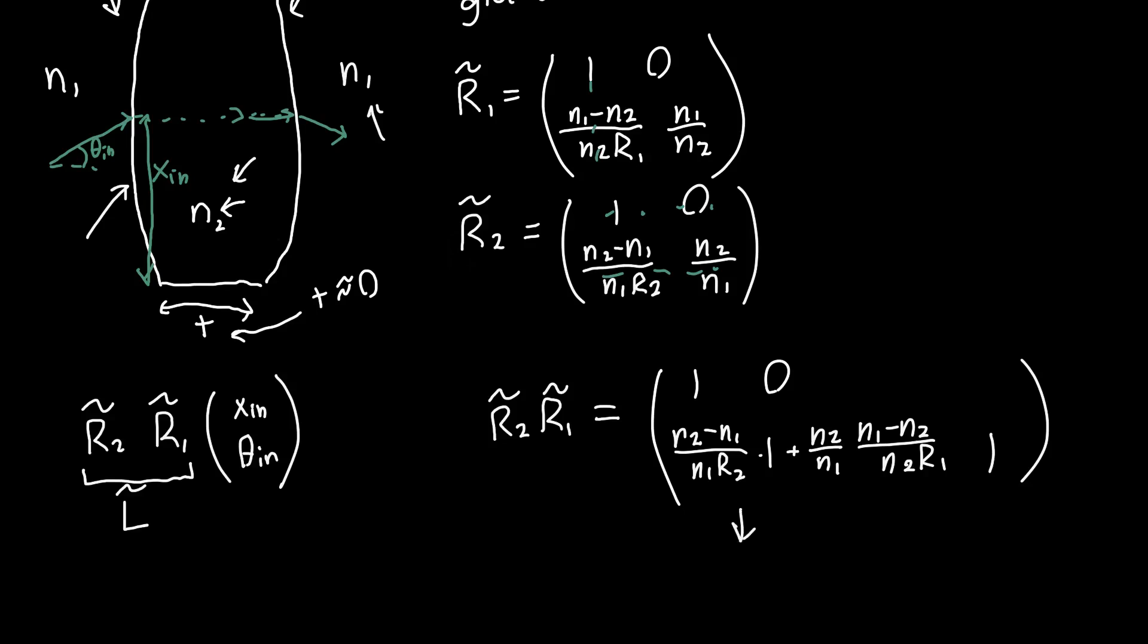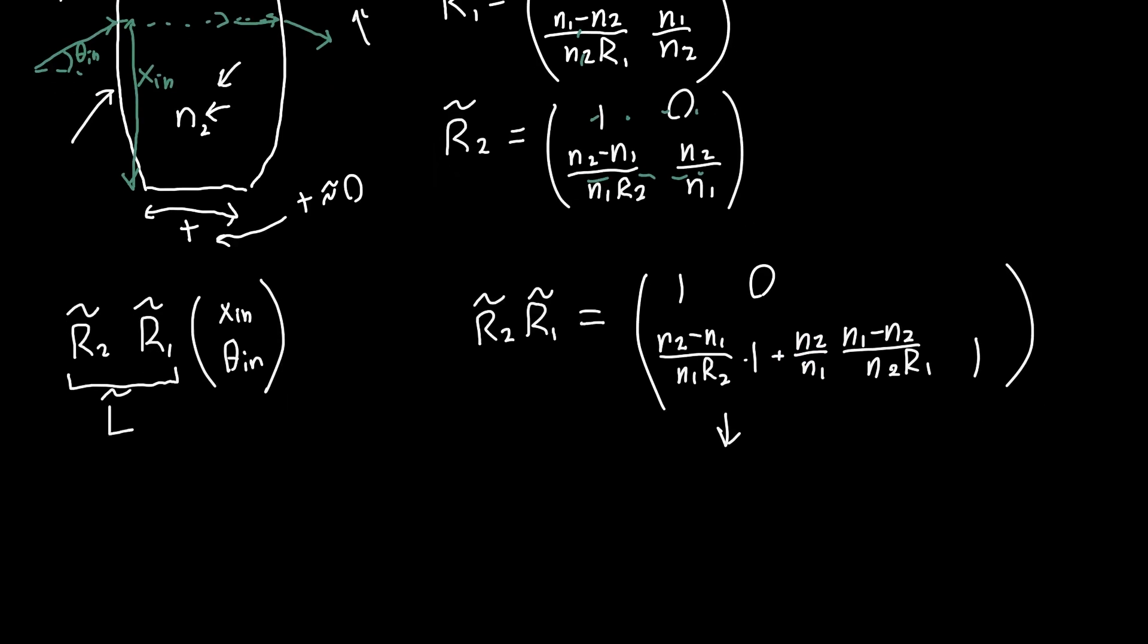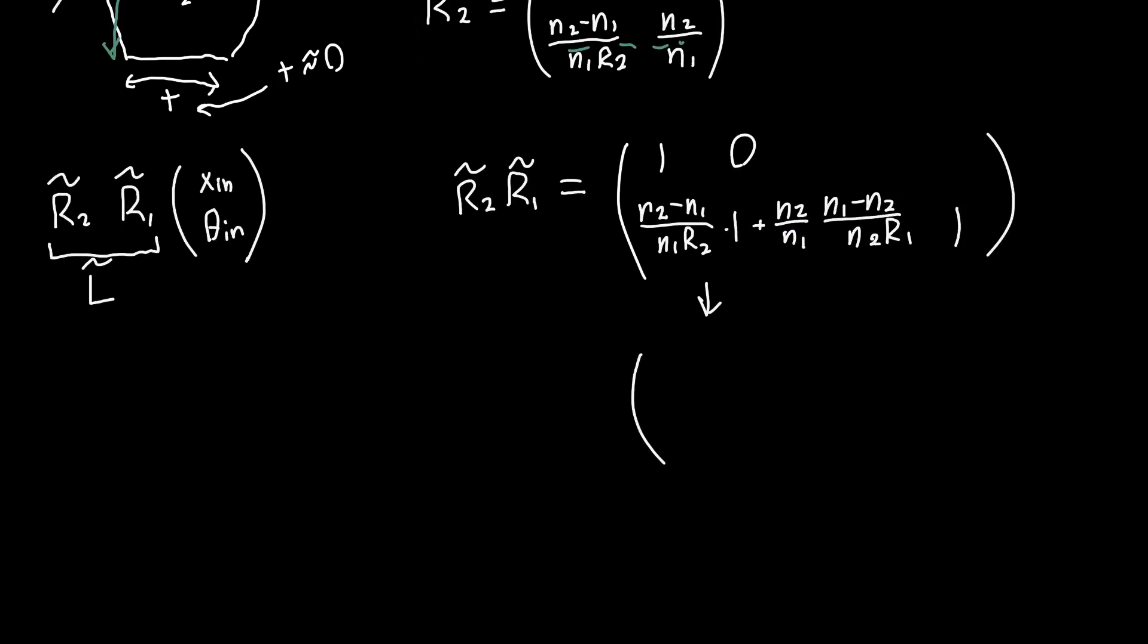We can simplify this a bit and make it look more like an actual square matrix. We'll get 1, 0, and then here the n2's will cancel, so these n2's will cancel and we'll be left with—we can factor everything out—n2 minus n1 over n1 times 1 over R2 minus 1 over R1, and then 1.